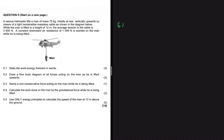The net work done on an object is equal to the object's change in kinetic energy. That's what the work-energy theorem essentially states.